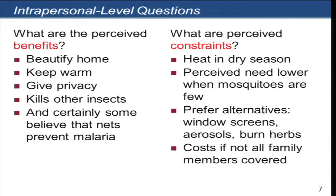Some constraints include lack of ventilation and heat. If mosquitoes are not very visible, like in the dry season, people may feel there won't be malaria and choose not to use the nets. Some people prefer alternatives — parts of Western Nigeria would much prefer a simple window screen built by a local carpenter, or they'll burn herbs or mosquito coils. People make choices based on their perceptions and preferences, so there is competition among different ways of preventing malaria from the community's point of view.